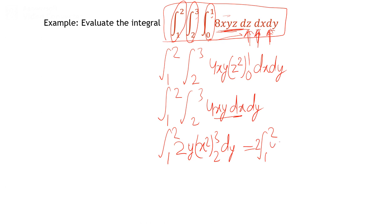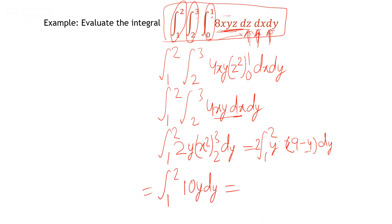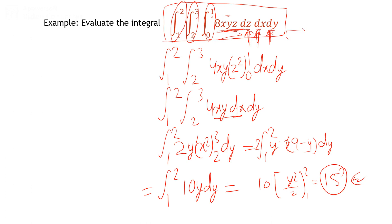Now apply the limit for x from 2 to 3: 2yx² gives 2y(9-4) = 10y. So the integral becomes the integral from 1 to 2 of 10y dy. Integrating gives 10y²/2 = 5y², and applying the limit from 1 to 2 gives 5(4-1) = 15. So the value of that integral is 15.